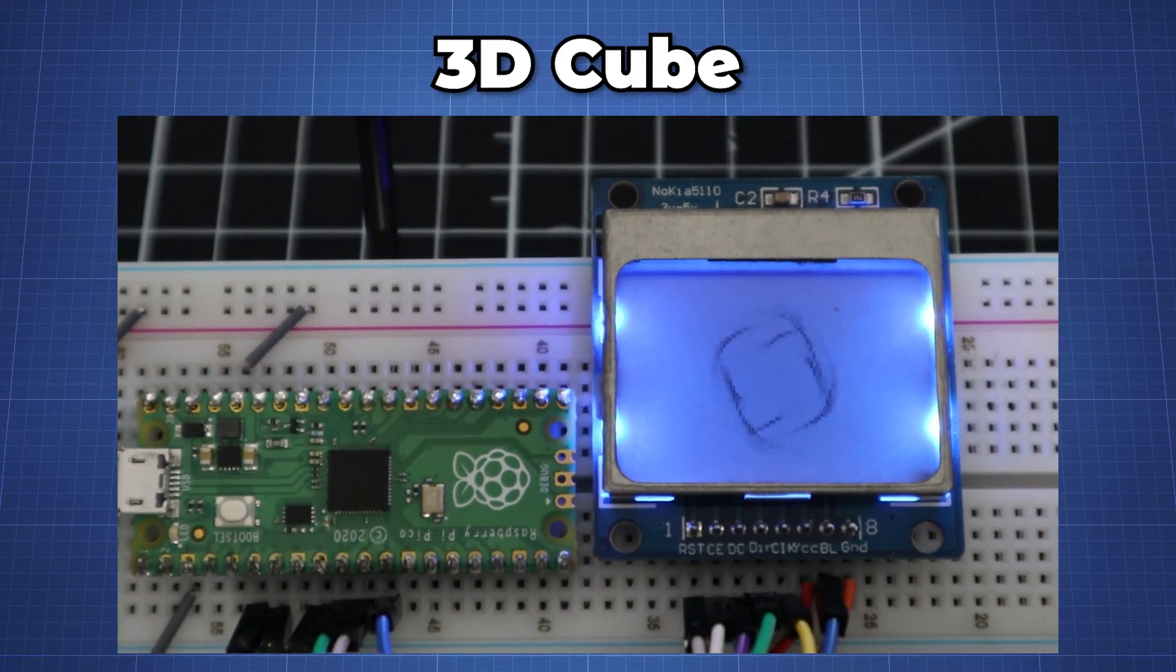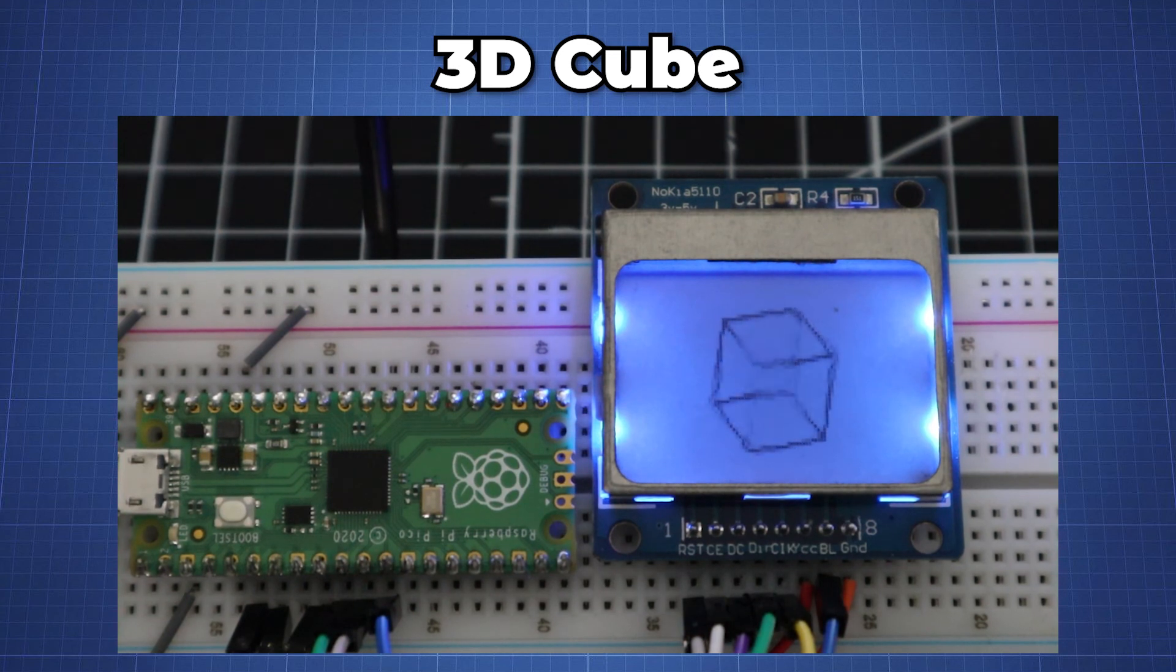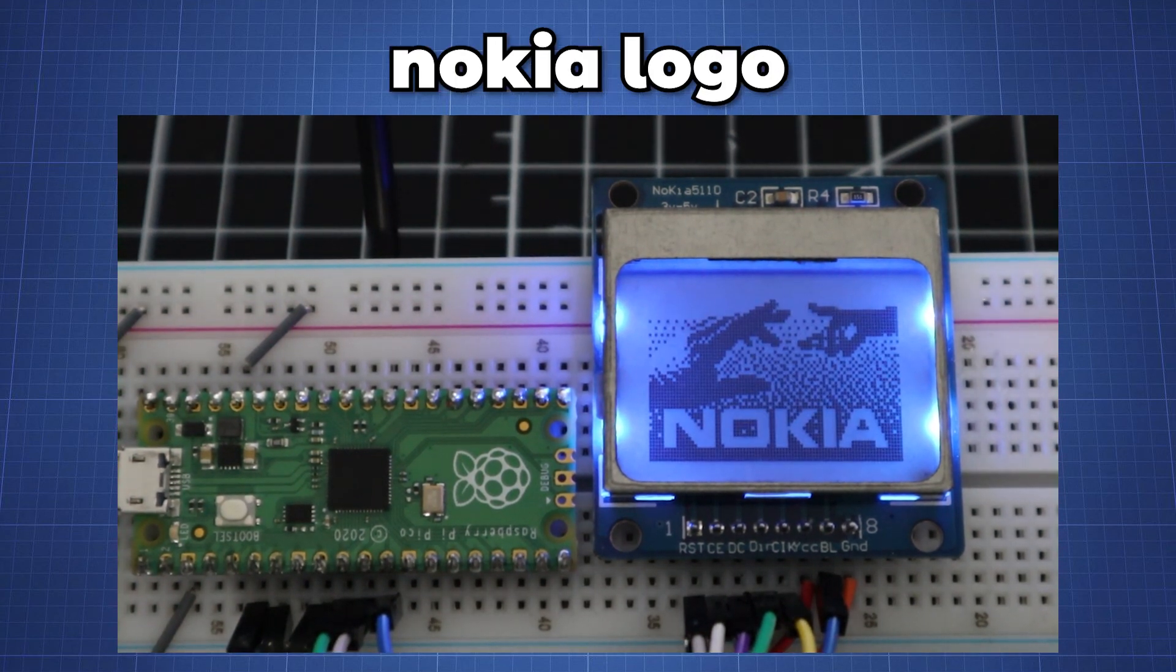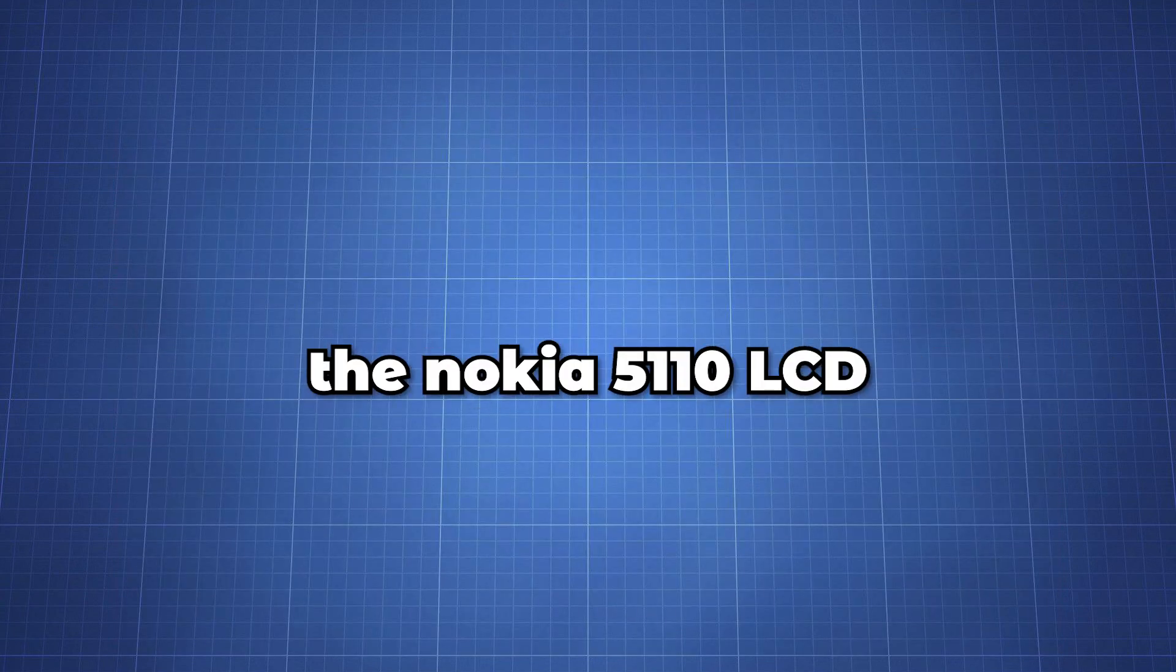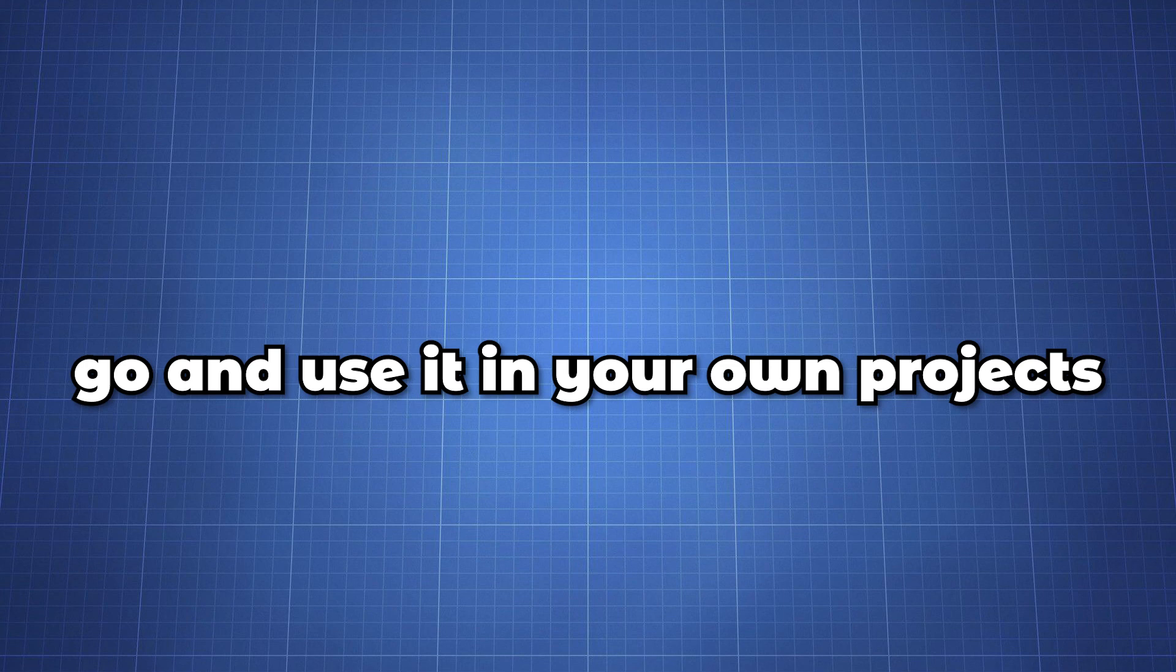Our second example here which is very cool is a 3d cube which you can dig through all the code if you want to know how it works and then finally this video cannot be finished without our last example which is the famous nokia's hands logo and now that you know how to use the nokia 5110 lcd go and use it in your own projects.